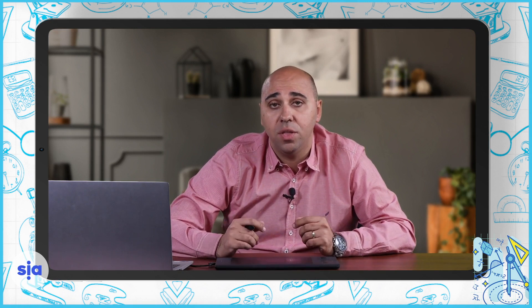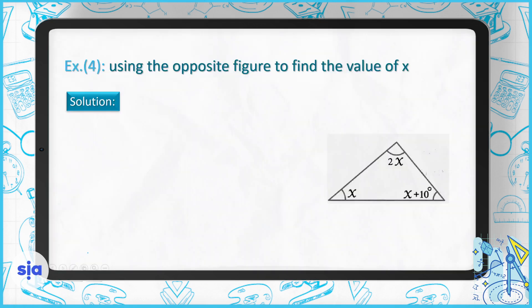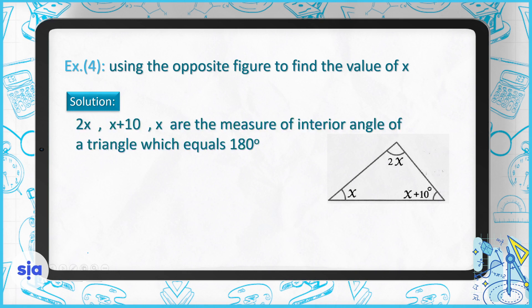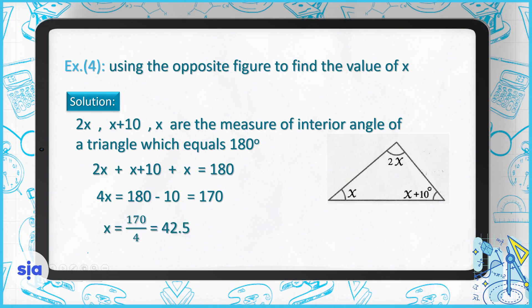Both ways are correct — you choose the better way for you. Exercise number 4: using the opposite figure, find the value of X. The sum of the interior angles of a triangle is 180. So X, X plus 10, and X together sum to 180. Adding them: 4X plus 10 equals 180. Moving the 10 to the other side, 4X equals 170, so X equals 170 over 4, which is 42.5.